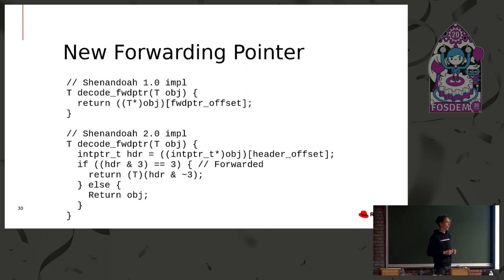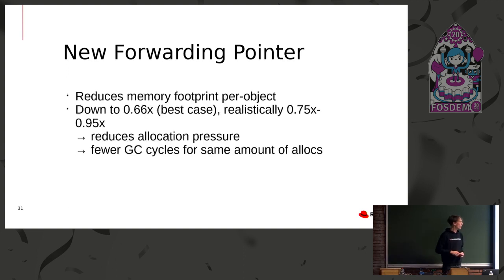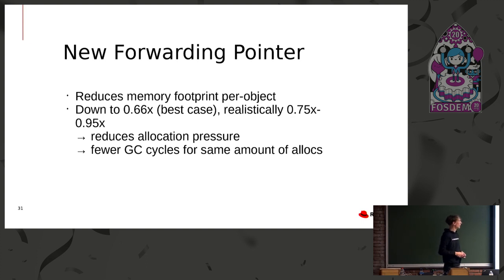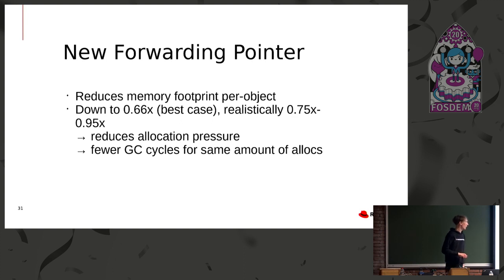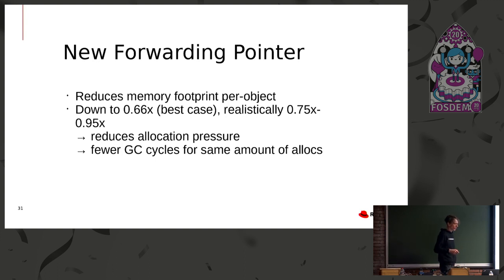This slightly more complex decoding is affordable because it happens much less frequently — it doesn't happen on primitive reads, only in the mid-path of the new load reference barrier. This reduces the memory footprint per object compared to old Shenandoah: in the best case about 66% reduction for an empty object (two words instead of three), and realistically a 75 to 95% reduction. Put differently, we now use the same amount of memory as any other GC. This also reduces allocation pressure so you can allocate more memory in the same time, and we need to run fewer GC cycles per unit of allocation, which translates into better CPU usage.